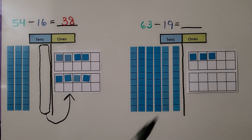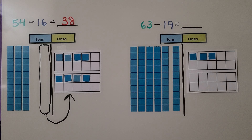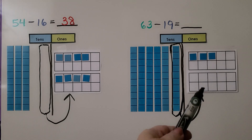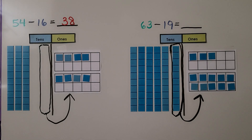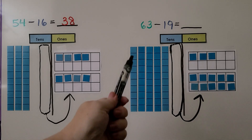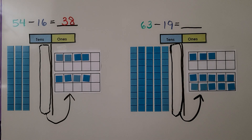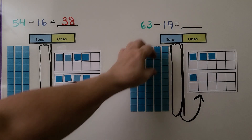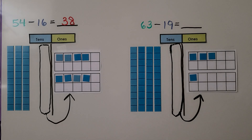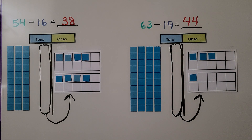We have 6 10s, 3 1s. We need to take away 1 10, 9 1s. But there aren't enough 1s to take away 9 1s, so we're going to turn this 10 into 10 1s — break it apart and put it in the 1s place. Now we have enough to take away 19. We take away 9 1s and 1 10. We're left with 4 10s, 4 1s. 4 10s and 4 1s is 44. So 63 minus 19 is equal to 44.